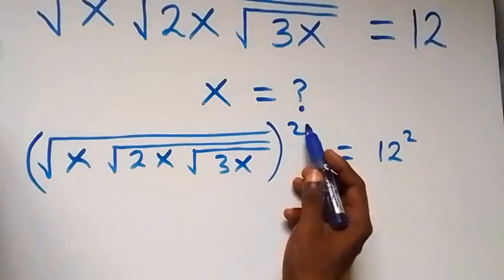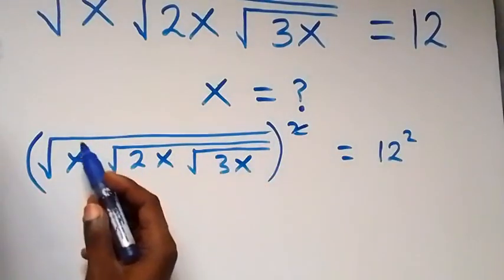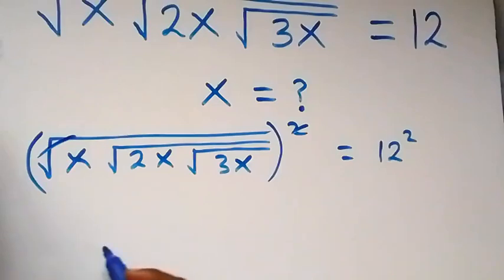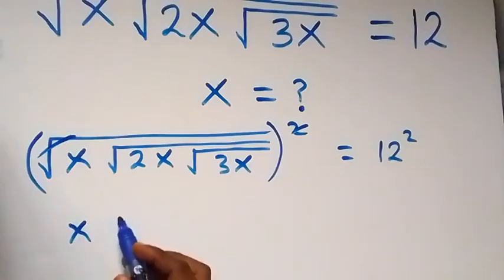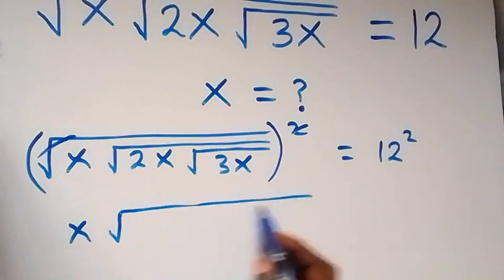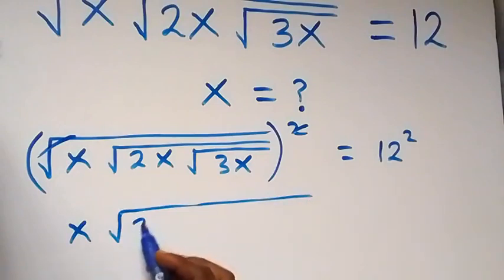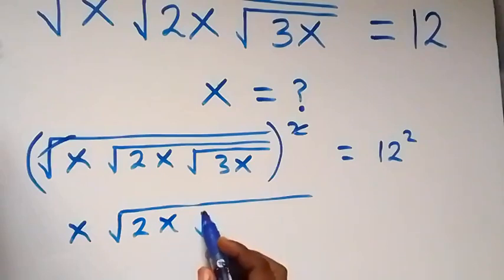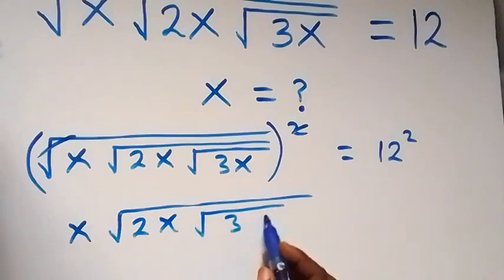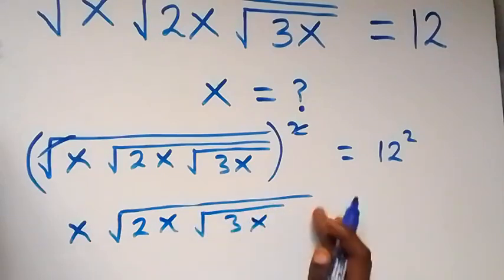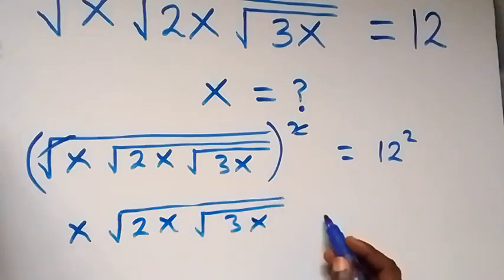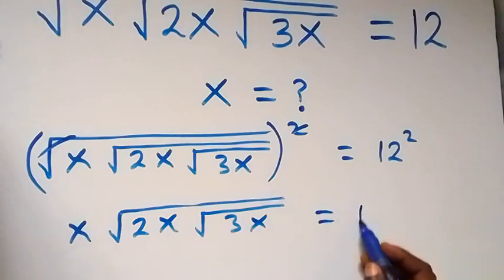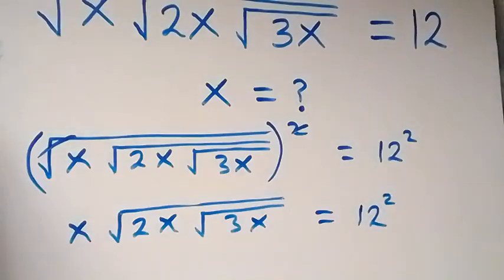From here, the square will cancel the square roots, then we are left with x multiplied by square root of 2x, then times square root of 3x. Let's still leave this as 12 squared from here.